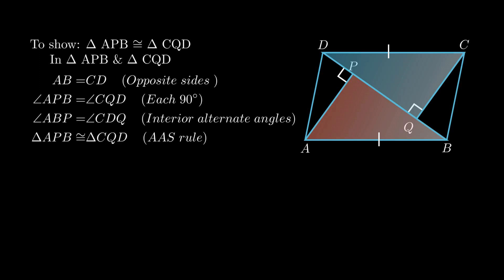Now to prove AP = CQ: since the triangles containing segments AP and CQ are proved congruent, by corresponding parts of congruent triangles we conclude AP = CQ.